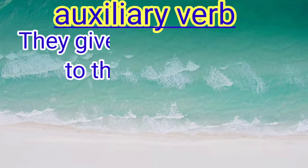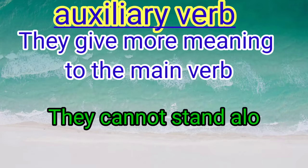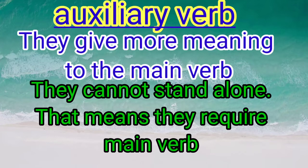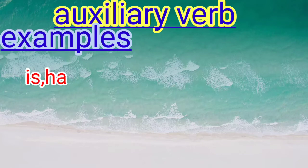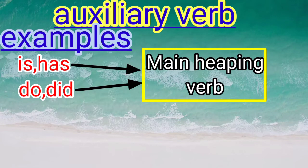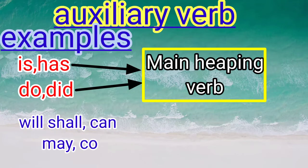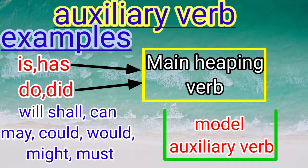Now let's look at auxiliary verbs or helping verbs. They give more meaning to the main verb. They cannot stand alone — they require a main verb for their existence. Examples are: is, has, do, did — these are primary helping verbs. And will, shall, can, may, could, would, might, must — these are called modal auxiliaries.